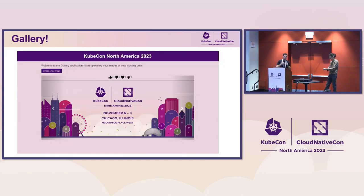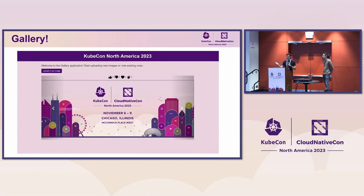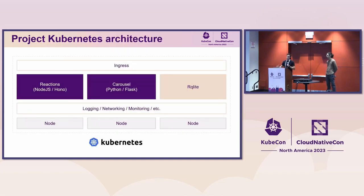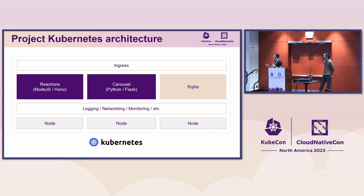To do that, we're using a sample gallery app — an app where you can upload pictures and add reactions like likes and dislikes, storing them in a database and as local file storage. The architecture includes a Node.js reactions module with a simple API using Hono, a Python Flask app for the frontend to upload and show pictures and communicate with the Node.js service for reactions, and an SQLite database chosen for its simple API integration. Then you have your Kubernetes environment with logging, networking, and all the different components.